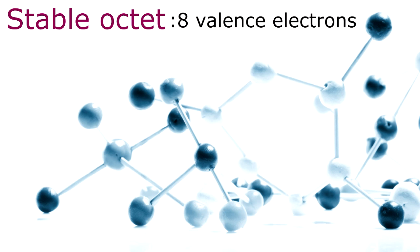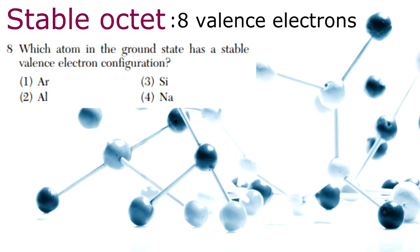Now let's look at a question on this. Which atom in the ground state has a stable balanced electron configuration? So what are we looking for? That's right - an element with eight balanced electrons.